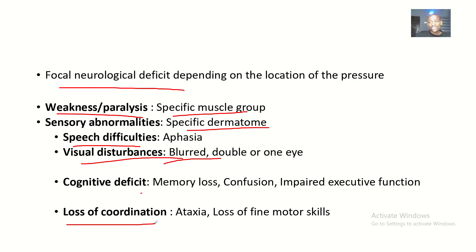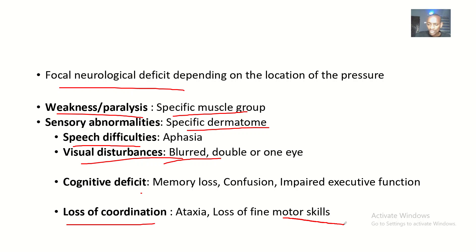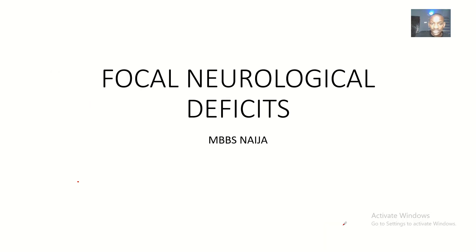There could also be loss of coordination. That's when the patient has things like ataxia — problems with movement and balance. There is also loss of fine motor skills, such as the ability to comb your hair or to write. You can actually lose these fine motor skills if you have focal neurological deficits.